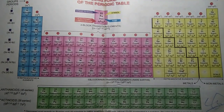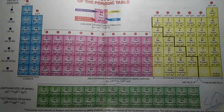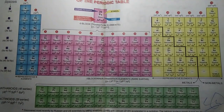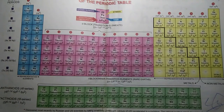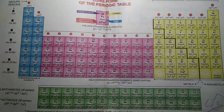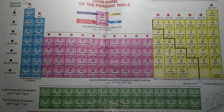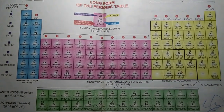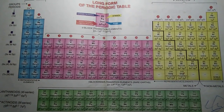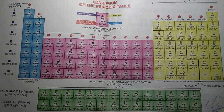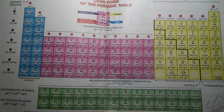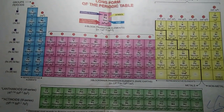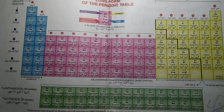Next is group 14. You can learn it with the mnemonic 'kahi shiv ji sunay parvati' — each word corresponding to an element in the group: carbon, silicon, germanium, tin, and lead.